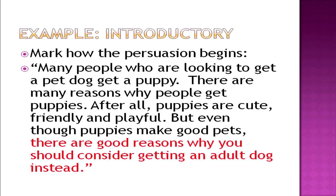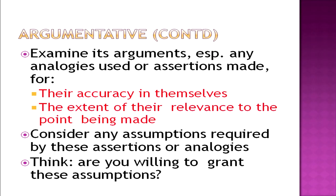Let's begin with an example of how the author can begin directly with persuasion. 'Many people who are looking to get a pet dog get a puppy. There are many reasons why people get puppies. After all, puppies are cute, friendly, and playful. But even though puppies make good pets, there are good reasons why you should consider getting an adult dog instead.' Mark the lines — how this author is persuading, how he is shifting the stance. He begins with talking about a puppy and gradually starts persuading dog lovers to settle with an adult dog.